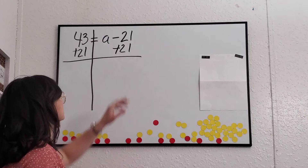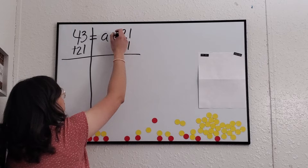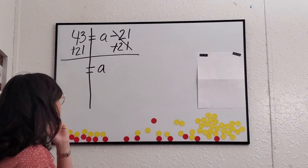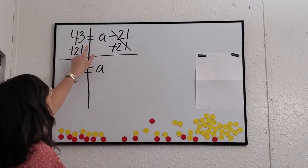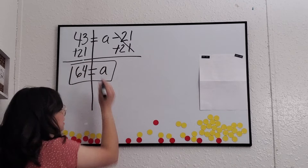Why add 21? Because we need to get rid of this negative 21, and the only way to do that is to make it equal zero. Negative 21 plus 21 equals zero, so we can cancel that on that side and that leaves us with just the variable a. On the other side we actually have to solve it, so we'll do 43 plus 21. 3 plus 1 is 4, and 4 plus 2 is 6 — and right there is our final answer of 64.